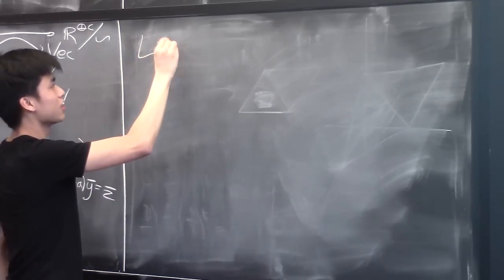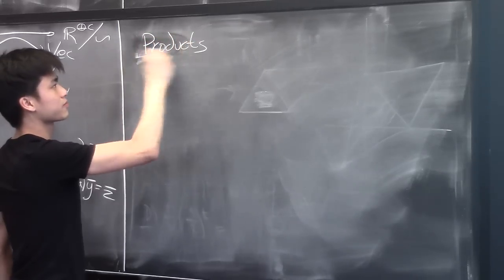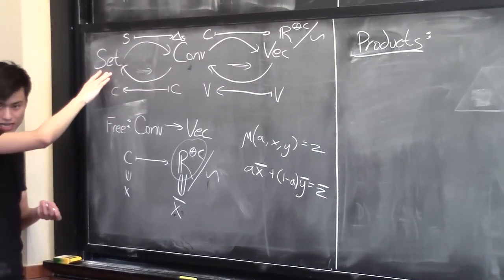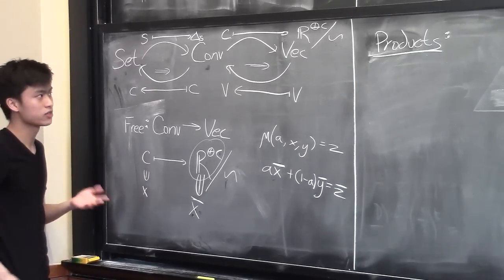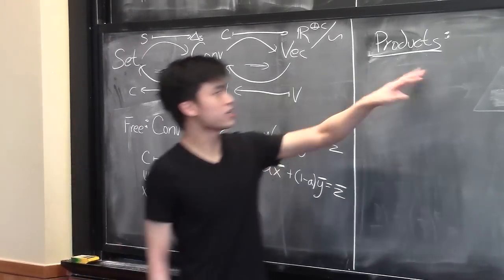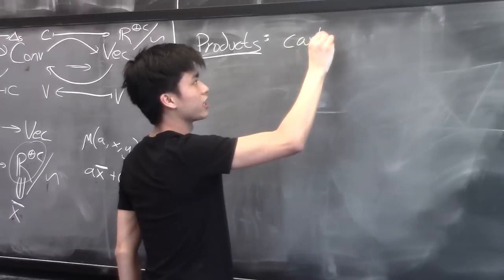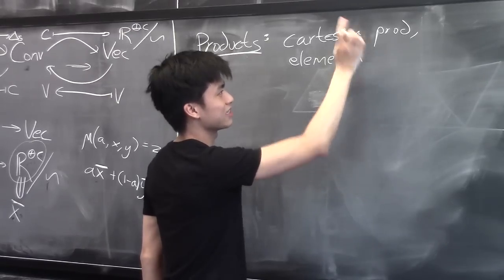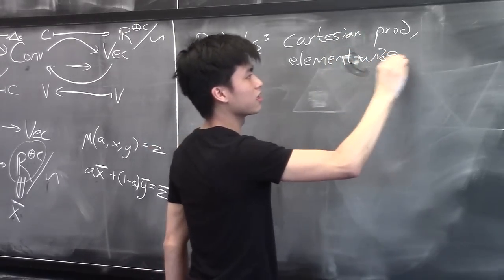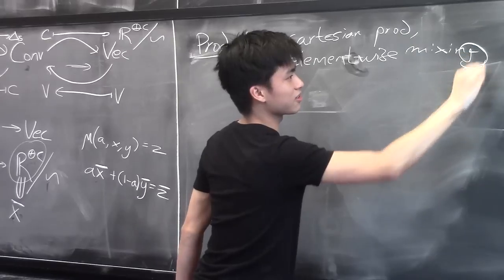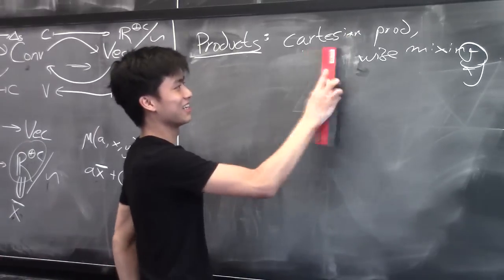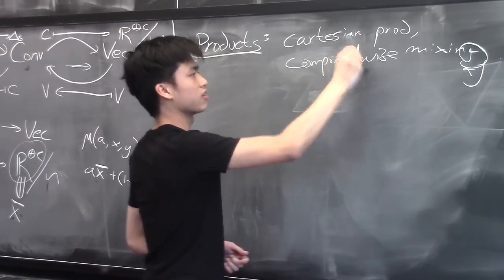Using this adjunction, we can be inspired to guess what the limits and colimits are. Since the forgetful functor has to preserve limits, every limit will just be whatever it is in Set. From this we can easily guess what the construction should be. In particular, the product will just be, as a set, the Cartesian product with component-wise mixing.